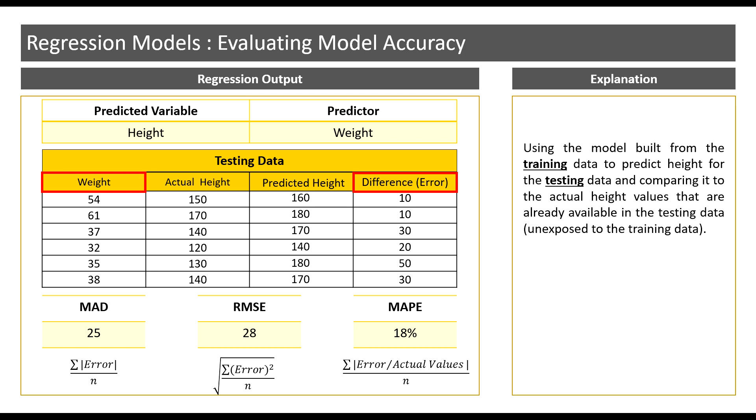Now let us move on to our last measure, that is MAPE. As I mentioned before, the MAPE is a relative measure. It expresses the error as a percentage. Therefore, when we say that the MAPE is 18% here, it suggests that next time I predict height, I would be nearly off by about 18%.